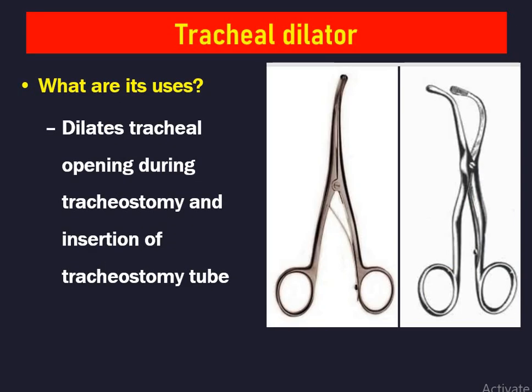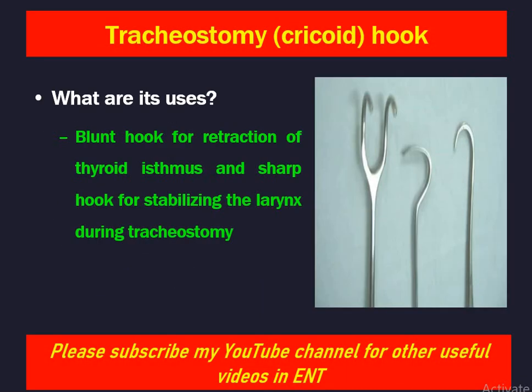Next instrument is the tracheal dilator. Its use is to dilate the tracheal opening during tracheostomy and for insertion of the tracheostomy tube. This instrument is always kept in the emergency tracheostomy set — when dressing and removing the tube it may be difficult to reinsert, so it is useful for dilatation and tube insertion. Next is the tracheostomy or cricoid hook. The blunt hook is used for retraction of the thyroid isthmus and the sharp hook is used to stabilize the larynx during tracheostomy.